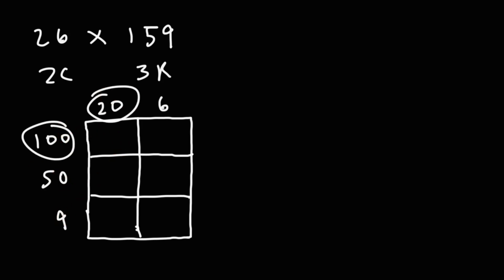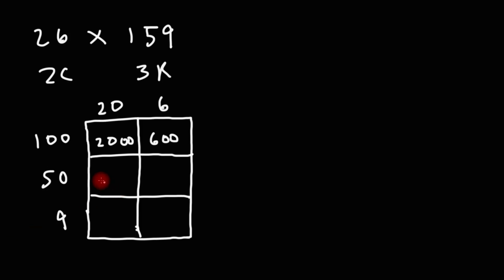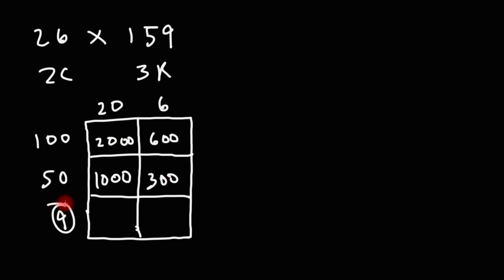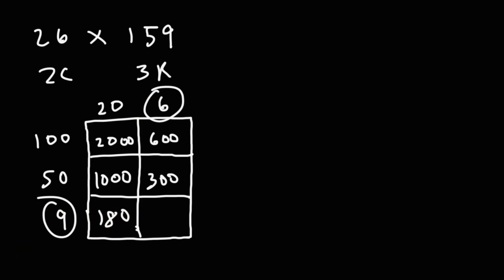100 times 20: 1 times 2 is 2; add the three zeros, we get 2,000. 100 times 6 is just 600. Next we have 50 times 20: 5 times 2 is 10; add the two zeros, you get 1,000. 50 times 6: 5 times 6 is 30; add the zero, you get 300. That may look like a 9 — I kind of thought it was a 4, but it's actually a 9. 9 times 20: if you have nine $20 bills, you have $180. And 9 times 6 is 54.